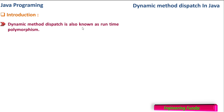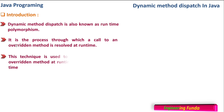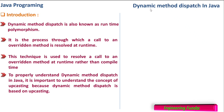Dynamic method dispatch is also known as runtime polymorphism. That means here we are going to see the concept of polymorphism where there are two methods with the same name and the execution of this method is decided at runtime. It is the process through which a call to an overridden method is resolved at runtime rather than at compile time. Hence the name is 'dynamic'.